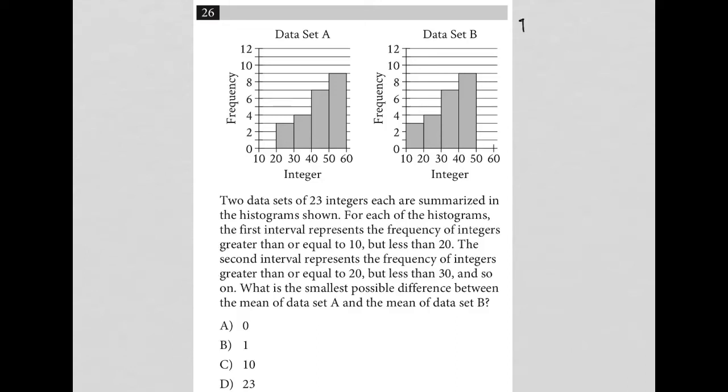So this question is a diagram question. We see our histograms provided here separated by two data sets, data set A and data set B. The question says two data sets of 23 integers. Okay, so that's important to know.